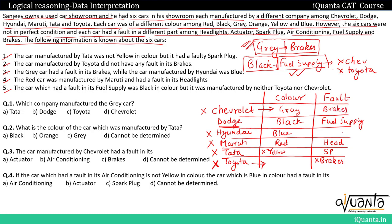Coming to Tata, the Tata car is not yellow in color. So we can assign yellow only to Toyota. That makes Tata the only remaining color, which is orange. So the Tata car will be orange in color.